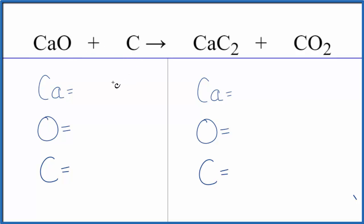So let's first count the atoms up and then balance the equation. We have one calcium, one oxygen, and one carbon atom.